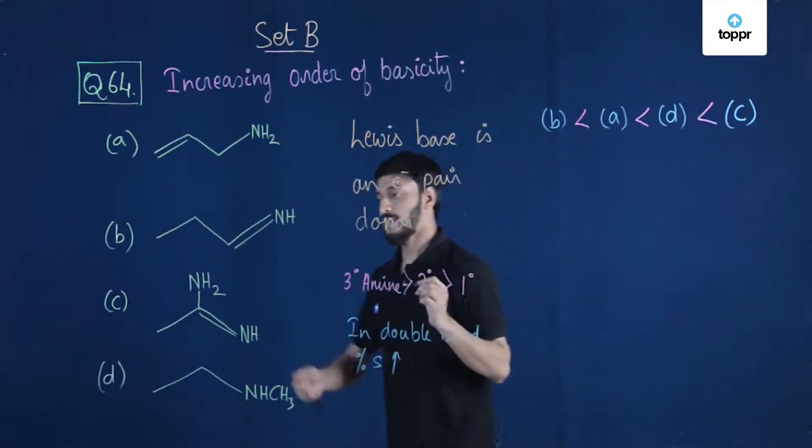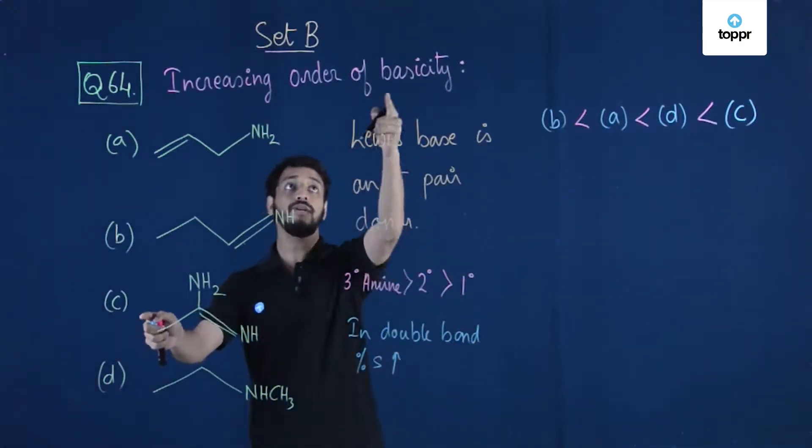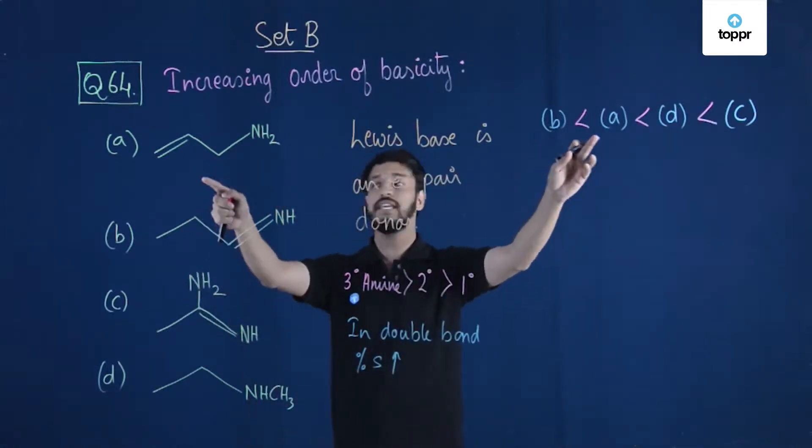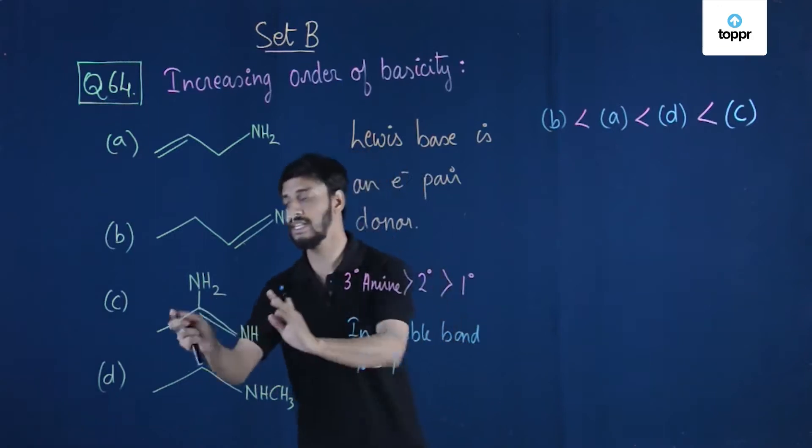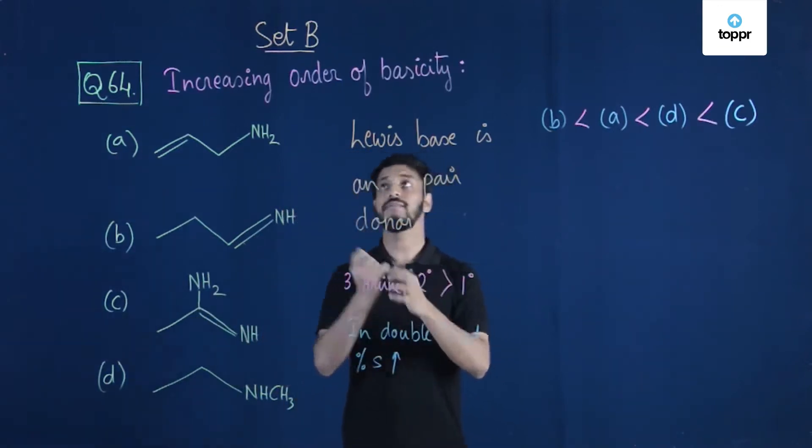The increasing order should be B, then we have A, then we have D, and last we have C. So C is the structure which is the most basic. Right?